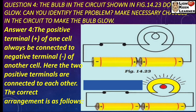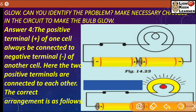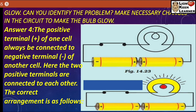Question number four: The bulb in the circuit shown in figure 14.23 does not glow. Can you identify the problem? Make necessary changes in the circuit to make the bulb glow. आप देख सकते हैं, positive से positive cell का कभी नहीं जुड़ सकता, अगर जुड़ेगा तो इसमें से current flow नहीं होगा. The positive terminal of one cell always be connected to negative terminal of another cell. Here the two positive terminals are connecting to each other. The correct arrangement: diagram two में bulb glow करता हुआ नजर आता है.